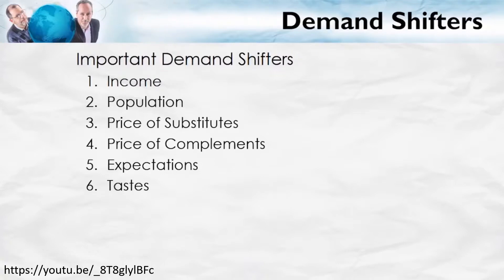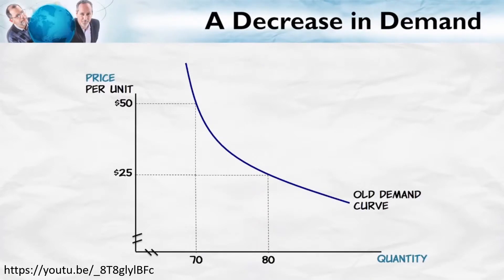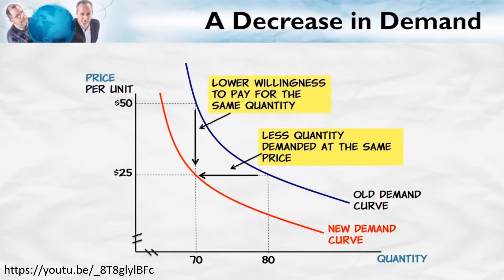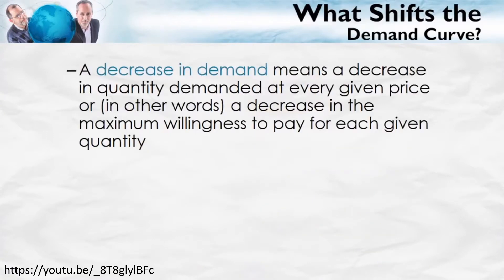A decrease in demand is a shift inwards of the curve toward the origin. It means that at any given price, there is less quantity demanded, and for any given quantity, there is a lower willingness to pay. A decrease in demand means a decrease in the quantity demanded at every given price, or equivalently, a decrease in the maximum willingness to pay for each given quantity. It is caused by anything that decreases the quantity demanded at a given price or decreases the maximum willingness to pay.